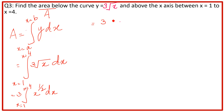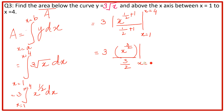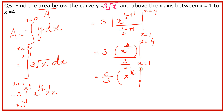Power rule से divide करना है। Limit x = 1 to x = 4 के साथ हम simplify करते हैं: power 1/2 + 1 = 3/2 हो गई, तो x^(3/2) divided by (3/2)। यह 3 × (2/3) = 6/3 = 2 हो जाएगा। तो हमारे पास आया 2 · x^(3/2), limits 1 to 4 के साथ।